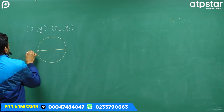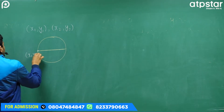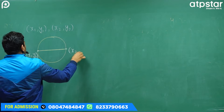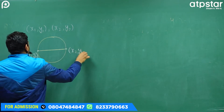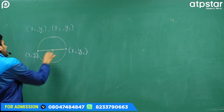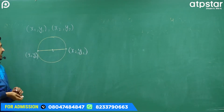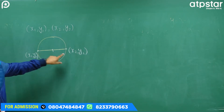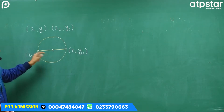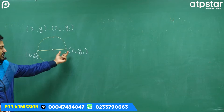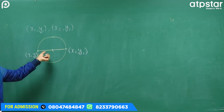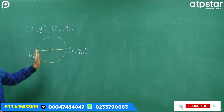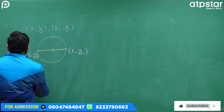यह point x1, y1 है और यह point x2, y2 है। एक तरीका यह है कि diameter के endpoints से center find कर लो — दोनों का midpoint — और इन दोनों के बीच की distance से diameter आ गया, उसको half करो तो radius मिलती है। Center और radius से equation लिख सकते हैं।